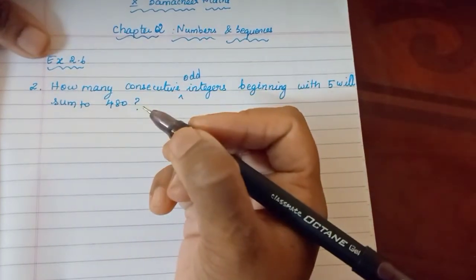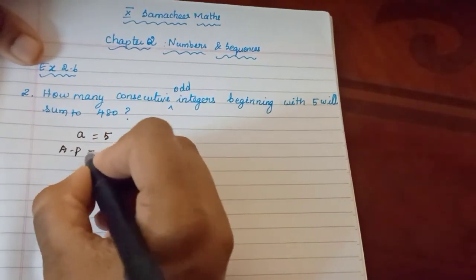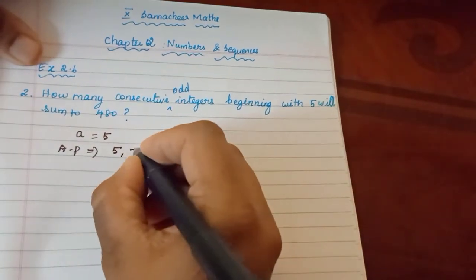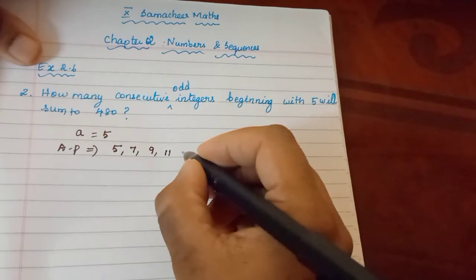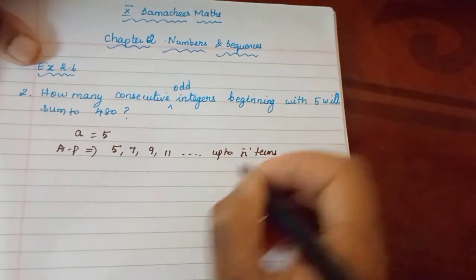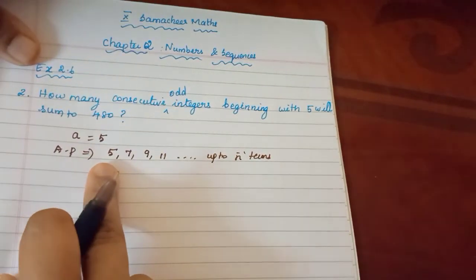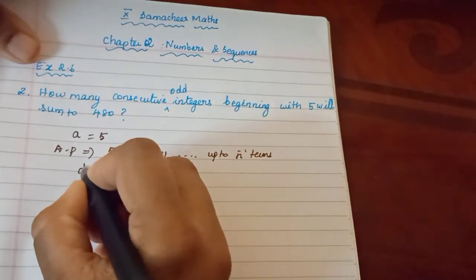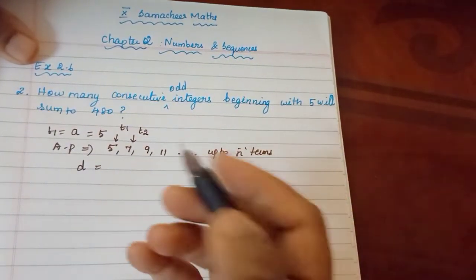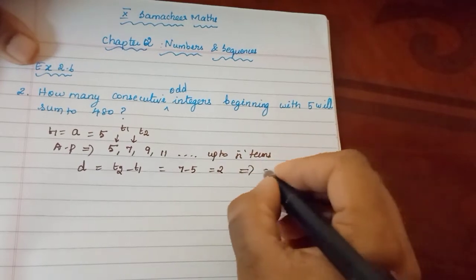So this is an AP where the 1st term A is equal to 5. The consecutive odd integers will be 5, 7, 9, 11 up to n terms. The common difference D = T2 minus T1 = 7 minus 5 = 2. So D is equal to 2.